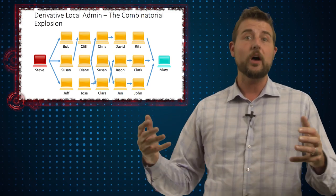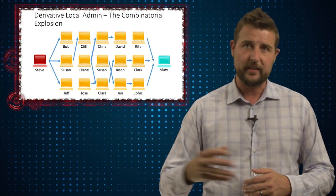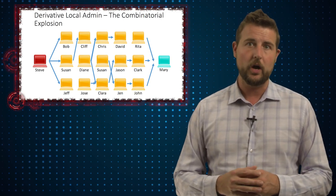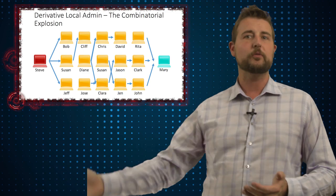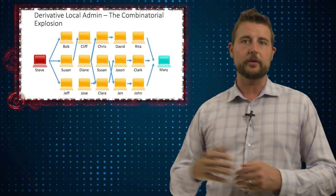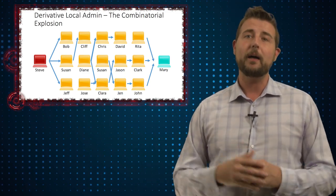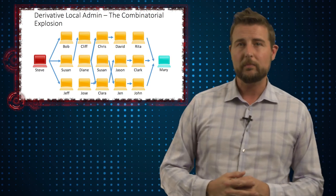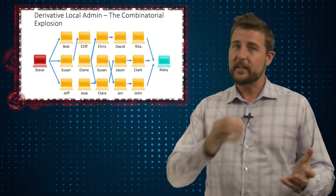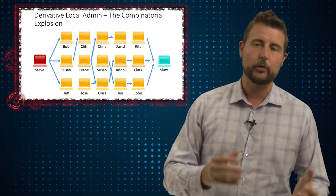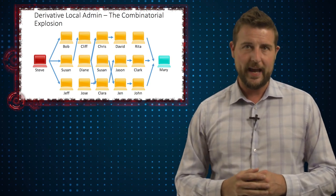If that other system has more users connected to it and maybe other sessions currently logged on, you gain even more credentials. Those credentials allow you to hop to another computer, and so on and so forth. By hopping around, you can eventually find more and more credentials, elevating your privilege, and eventually there will be a path — six degrees or so — to a domain administration account.